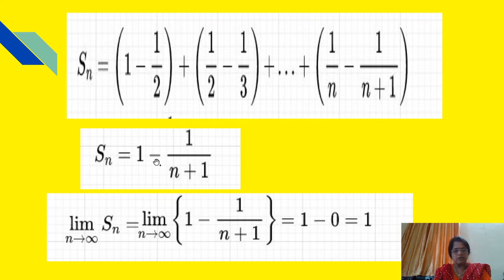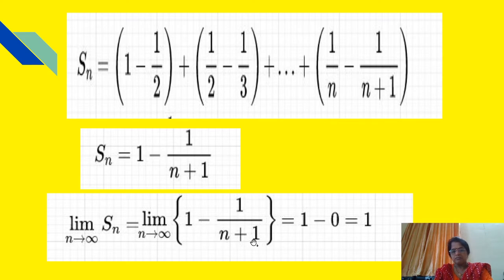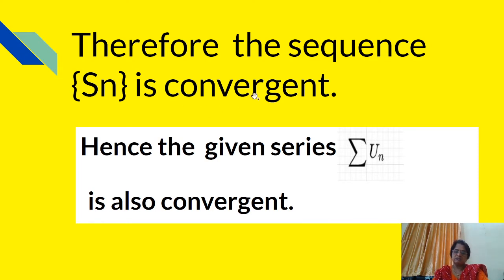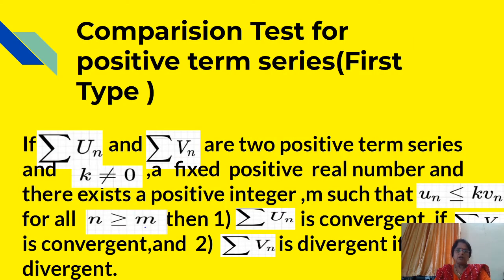Taking the limit as n tends to infinity on both sides: limit of Sn = limit of [1 − 1/(n+1)]. When n tends to infinity, 1/(n+1) tends to 0, so we get 1 − 0 = 1. Therefore the sequence Sn is convergent, and hence the given series Σun is also convergent.